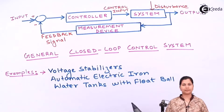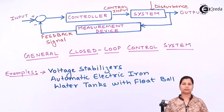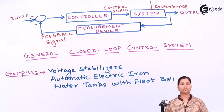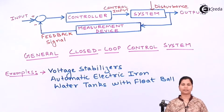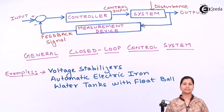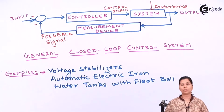So these were the examples of the closed loop control system. In this video we have studied about open loop control systems and closed loop control systems. We have represented these systems as general block diagrams and then seen some examples of open loop and closed loop control systems. I hope that you have clearly understood the topic. Thank you.